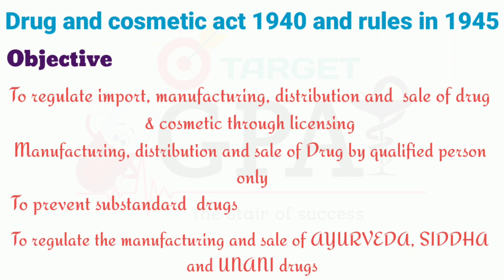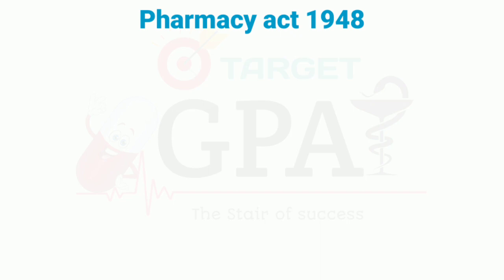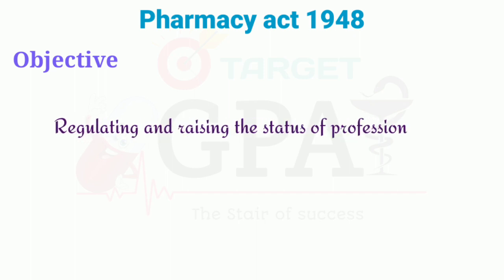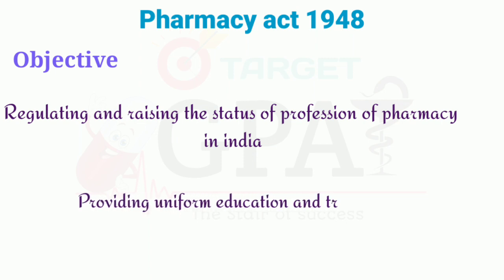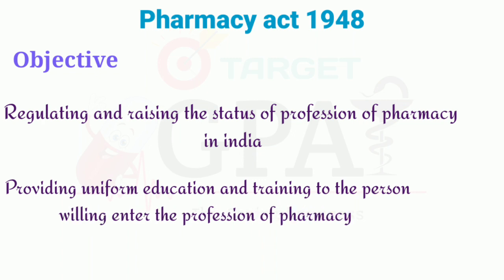So that was the Drugs and Cosmetics Act, which came in 1940 and its rules came in 1945. The second act is the Pharmacy Act, which came in 1948. The objective of the Pharmacy Act is regulating and raising the status of the profession of pharmacy in India, and providing training to persons willing to enter the profession of pharmacy.